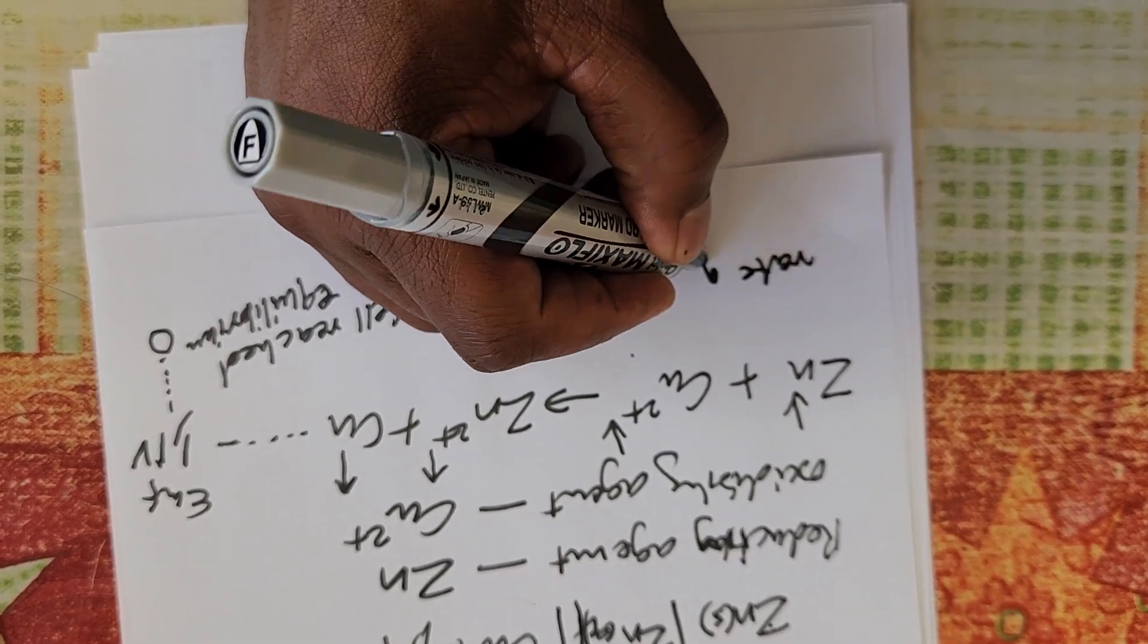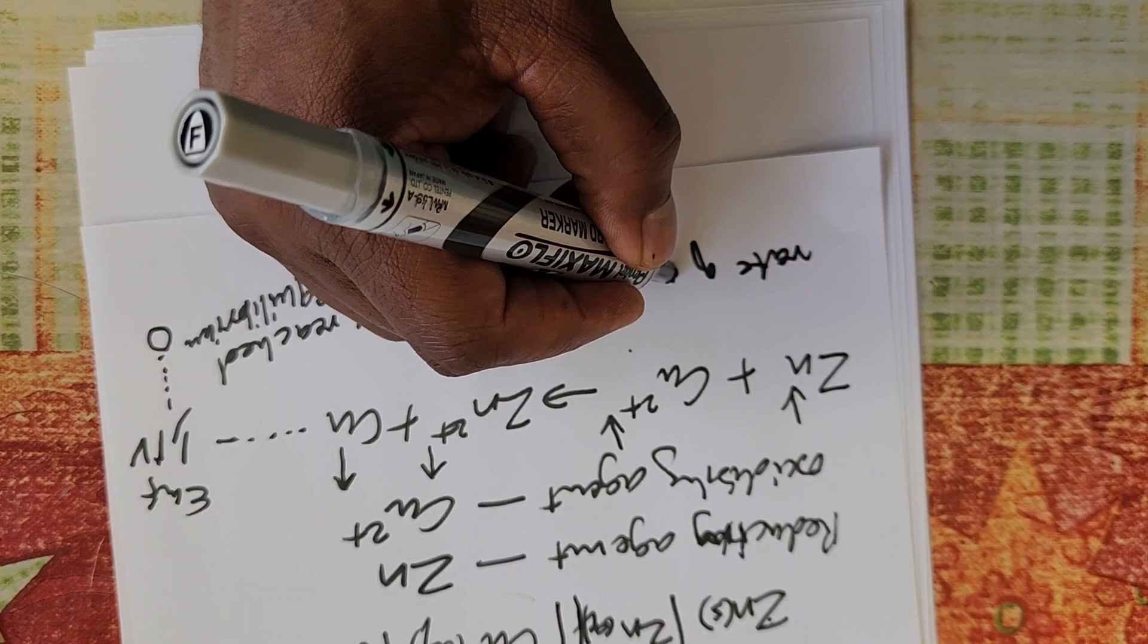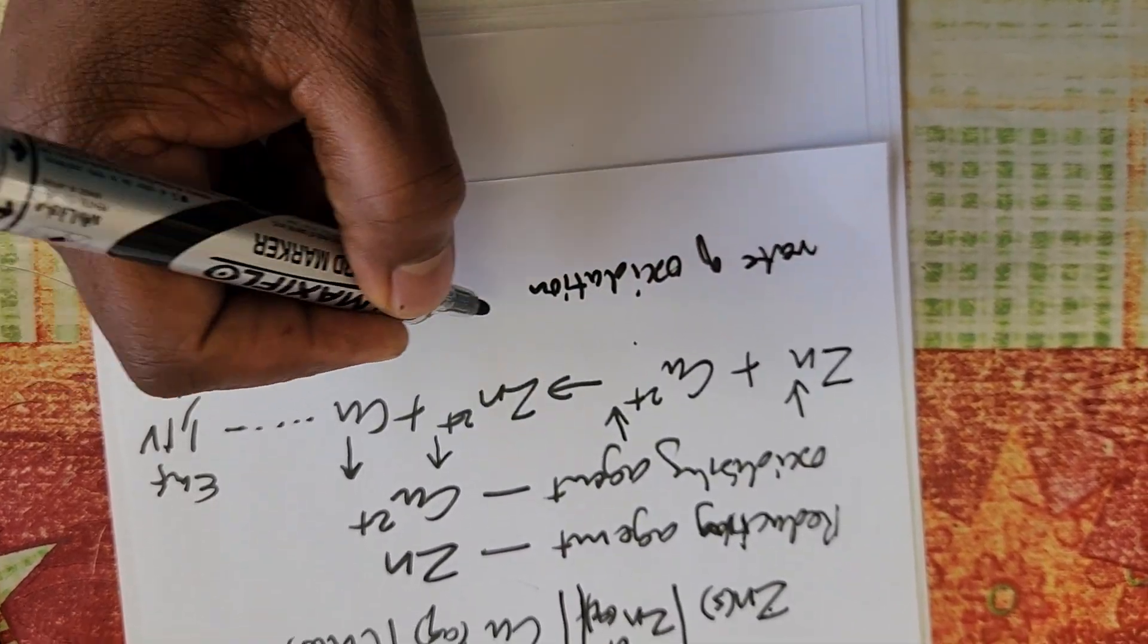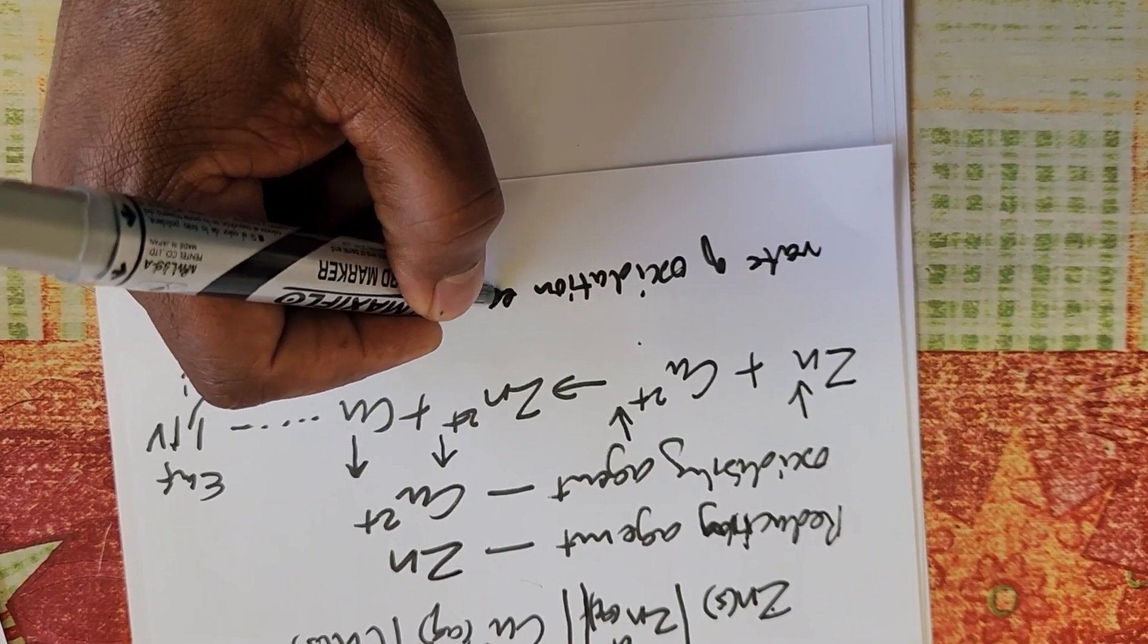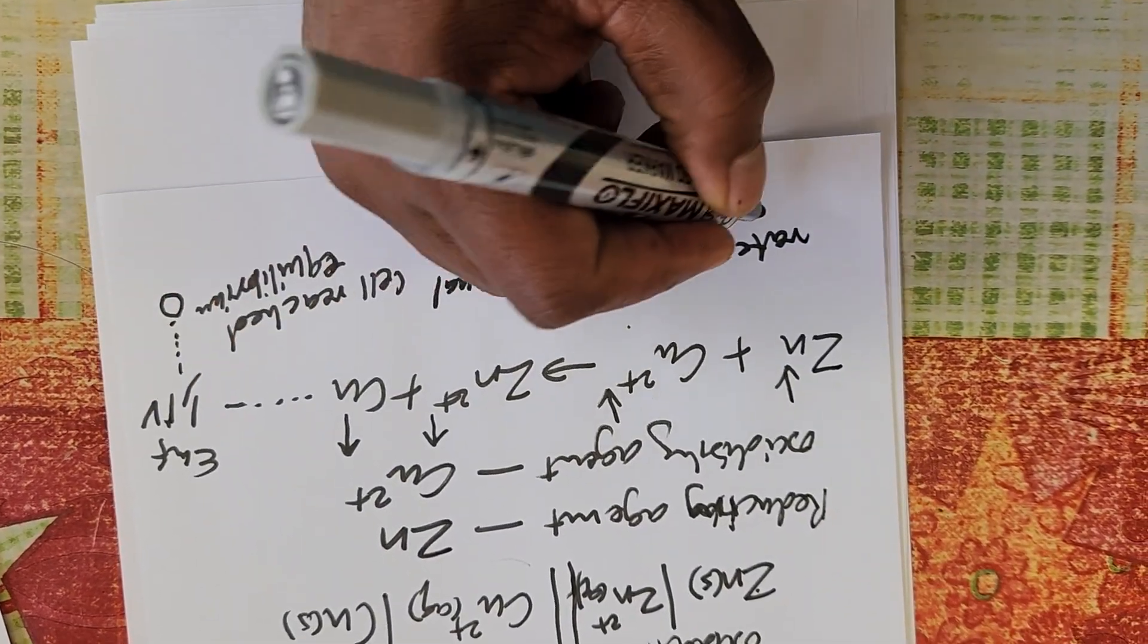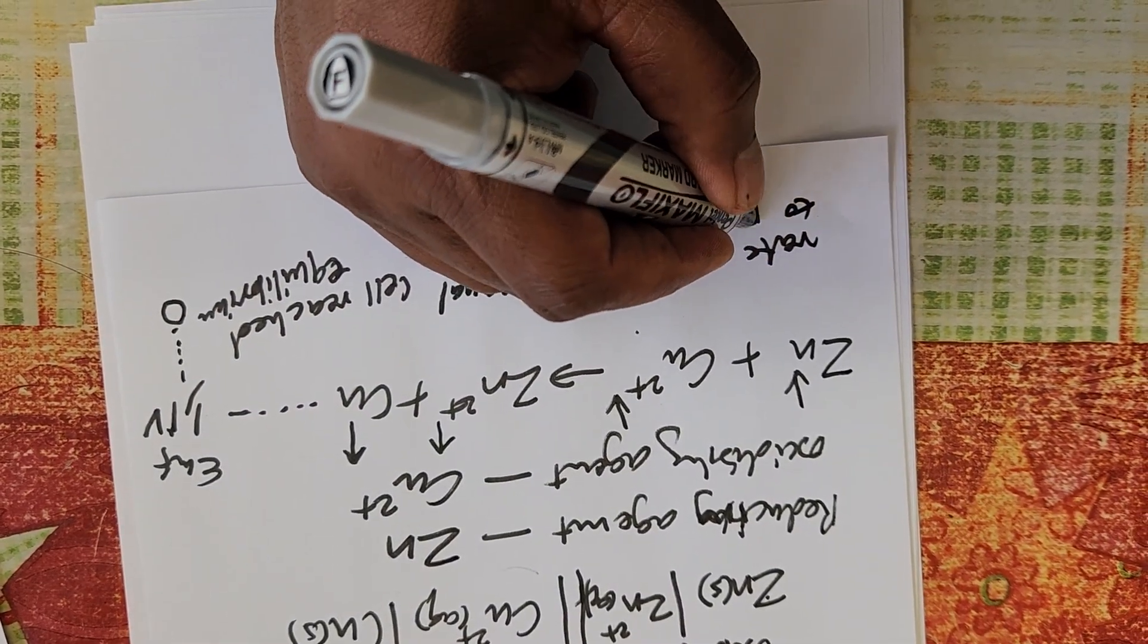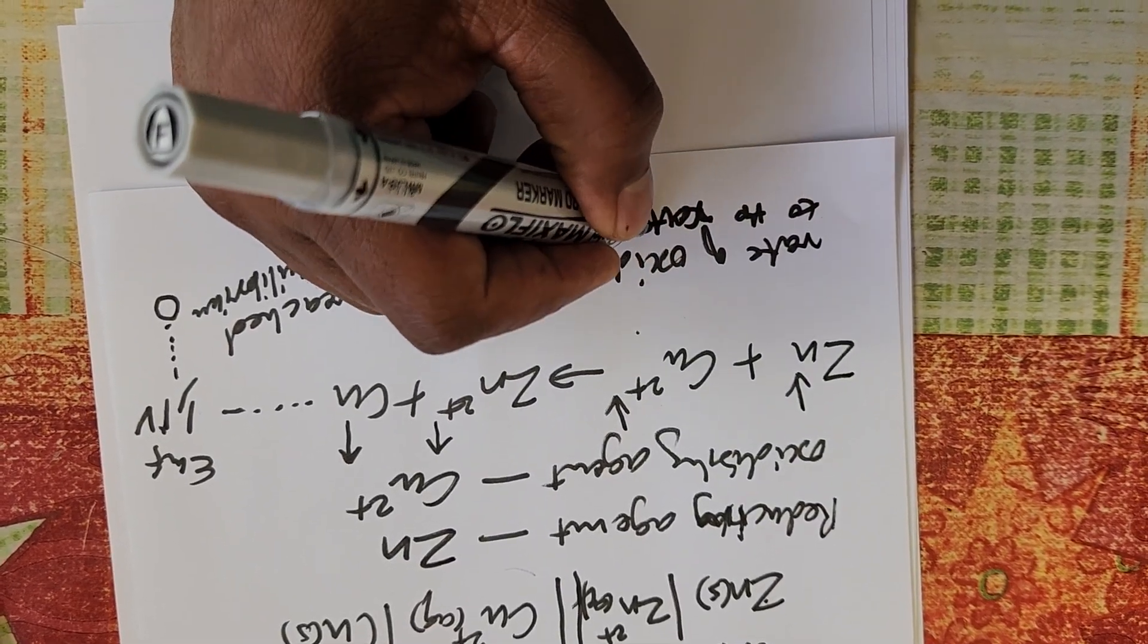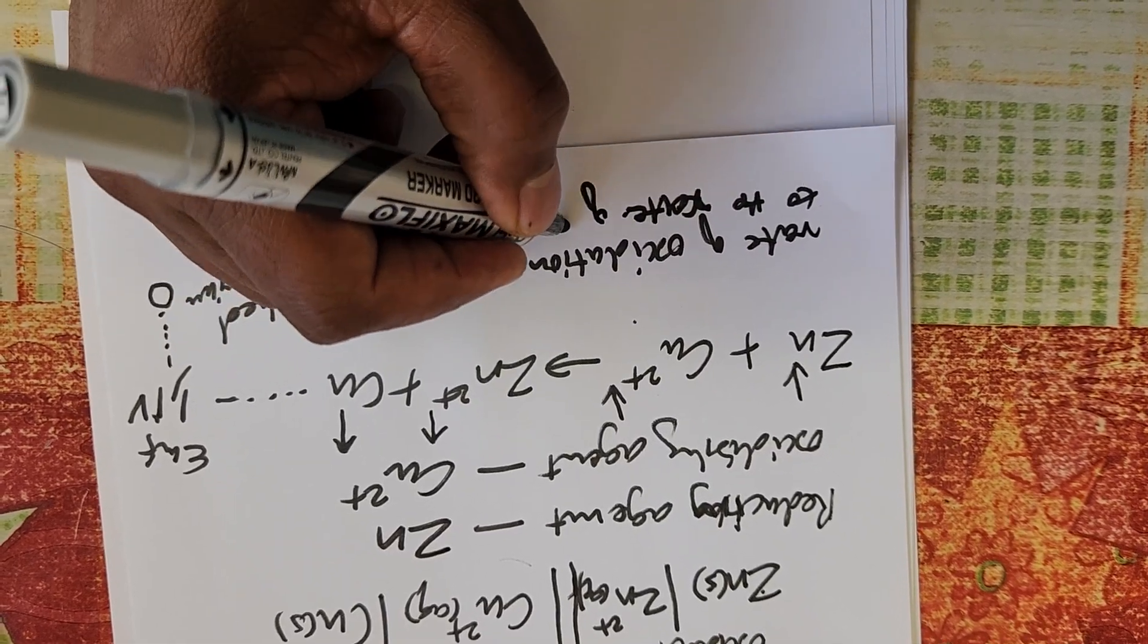When the cell has reached equilibrium, when the EMF is zero—dropped to zero—it means that now the rate of oxidation equals the rate of reduction.